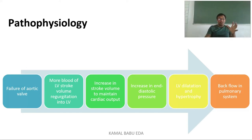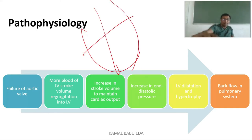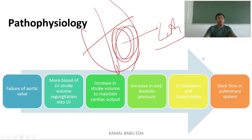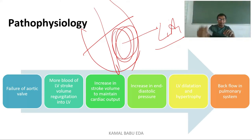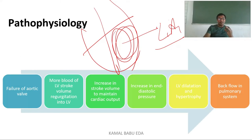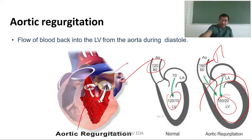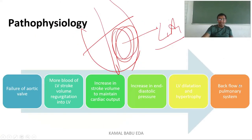In the pathophysiology, when predisposing factors cause aortic valve failure, more blood pools in the left ventricle, causing left ventricular hypertrophy and increased stroke volume. The cardiac output cannot be maintained, so blood pools back. End diastolic pressure increases, while in the arch of aorta it decreases, leading to left ventricular dilatation and hypertrophy.